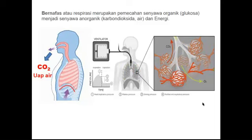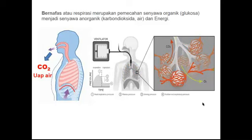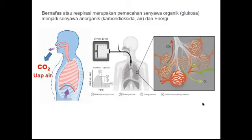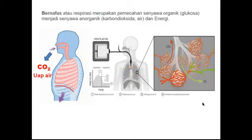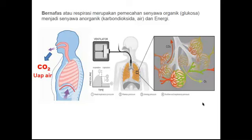Glukosa menjadi senyawa anorganik, yaitu berupa karbon dioksida dan uap air dan energi. Terjadinya pemecahan senyawa organik yang menghasilkan senyawa anorganik itu di seluruh sel-sel tubuh. Menghasilkan sampah yaitu karbon dioksida. Kalau air bisa juga, tapi dalam bentuk uap air. Kalau dikeluarkan melalui kulit, dalam bentuk keringat.